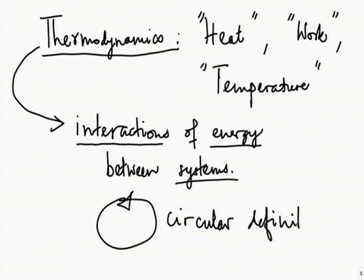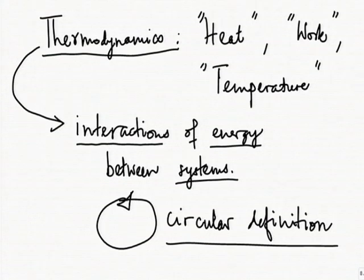At this stage there is nothing wrong in using a circular definition because we want to compress a lot of ideas into one sentence, and without reference to one or more of those ideas it will be impossible to give a compact definition. So we will accept this circular definition, but our effort throughout will be to define terms like heat, work, temperature, energy, and many other terms without falling into the trap of providing a circular definition.